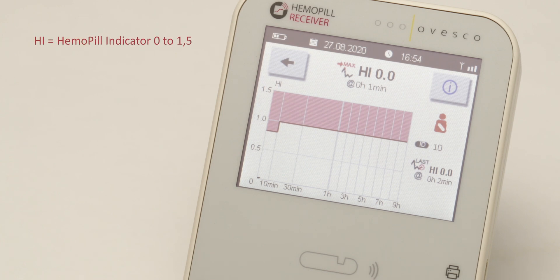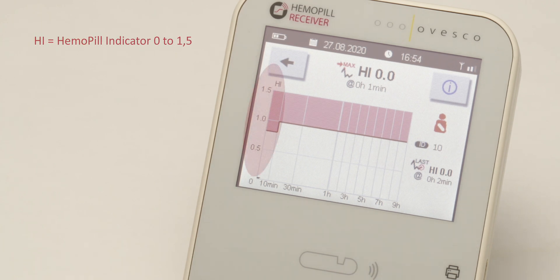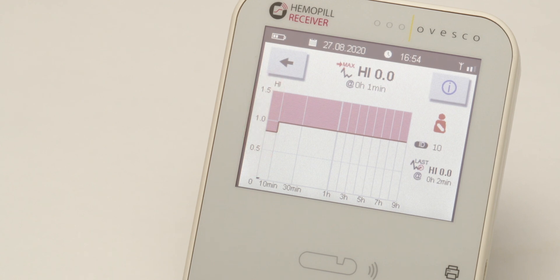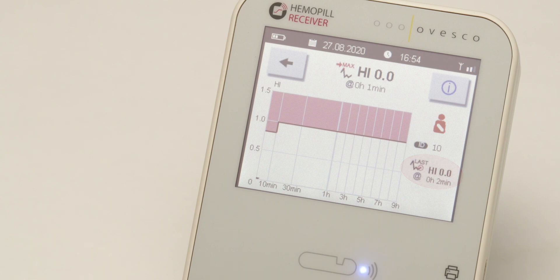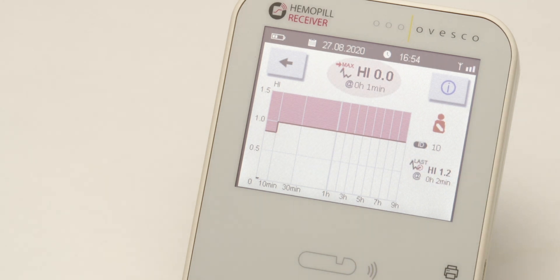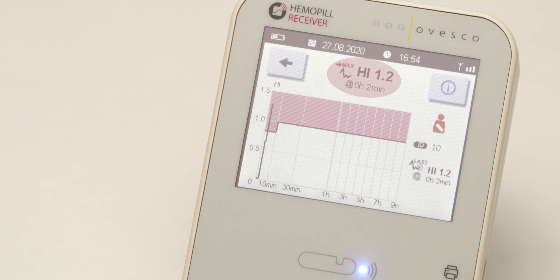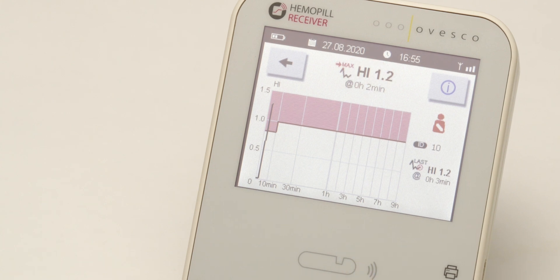The measurement of blood is represented by the Hemopill indicator, HI. The last HI value shows the current measurement value. The highest value of the measurement so far, max HI, results in a graph over time.